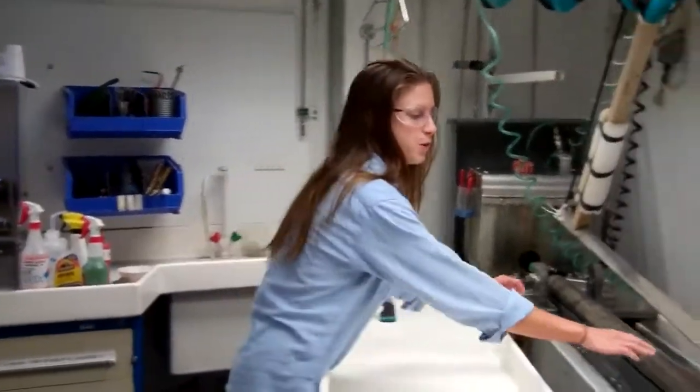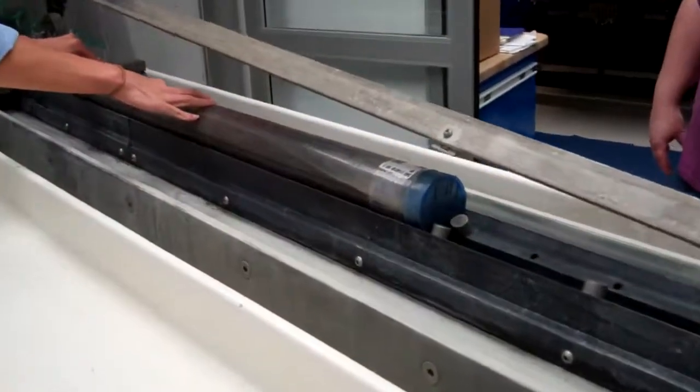This is the splitting room of the core lab. This is where we split all the cores into two section halves.